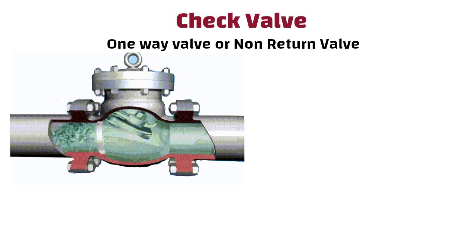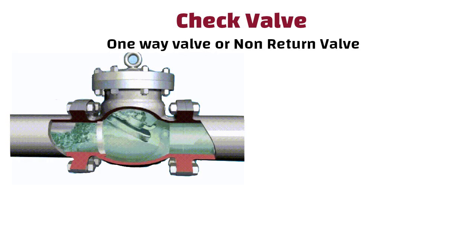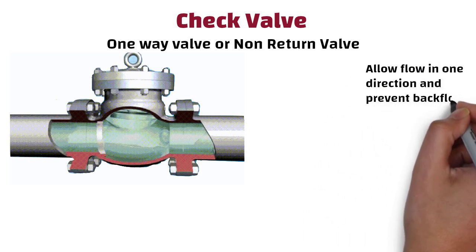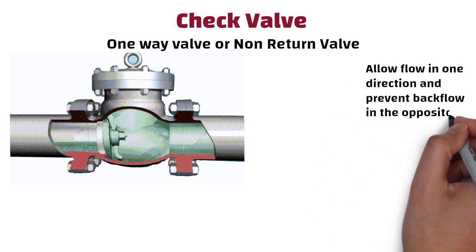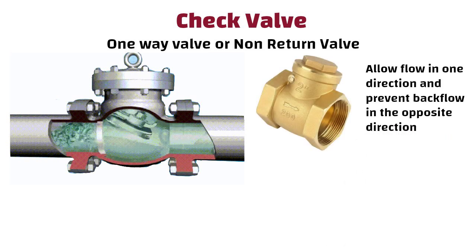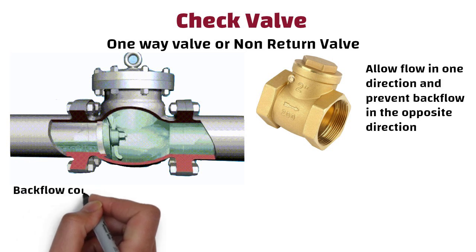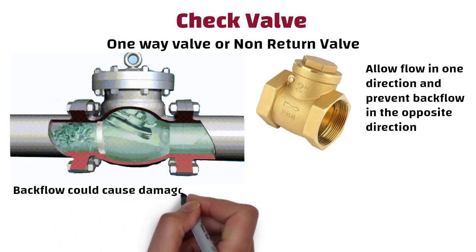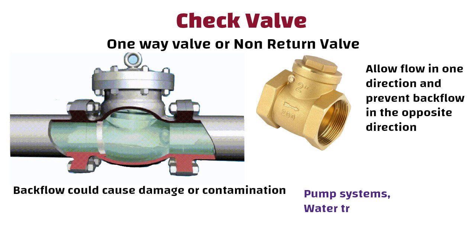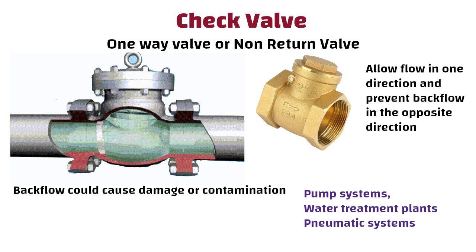Check valves, also called one-way valves or non-return valves, allow flow in one direction and prevent backflow in the opposite direction. These kinds of valves are used in systems where backflow could cause damage or contamination, such as in pump systems, water treatment plants and pneumatic systems.